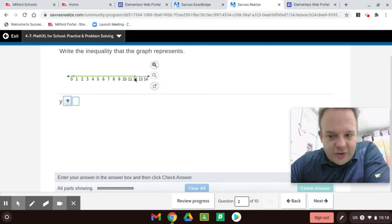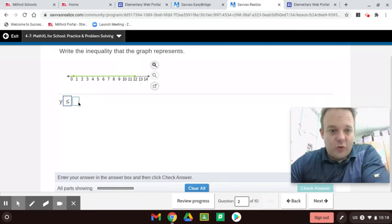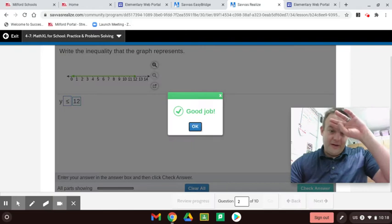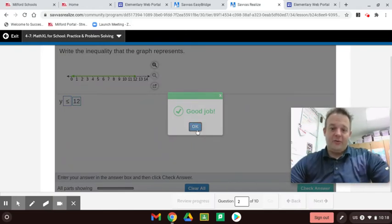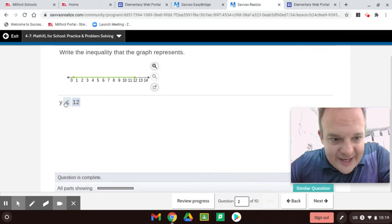This is a closed circle. Do you guys remember what a closed circle was? That would be less than or equal to, or greater than or equal to, and it's shading to the left. So, what this means is Y is less than or equal to 12. That means it can include 12. It does include 12.